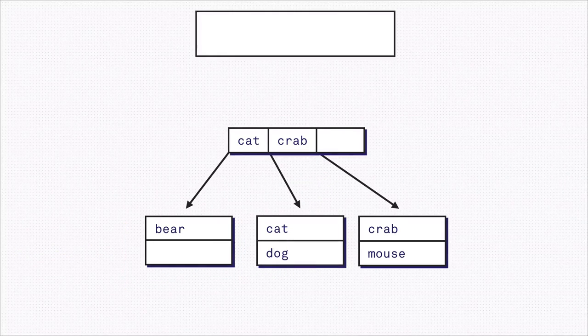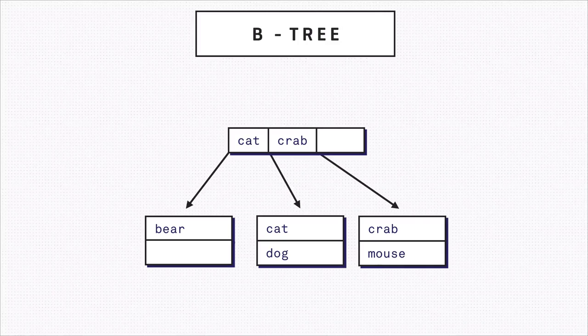This data structure is called a B-tree. Balancing the B-tree is a cost that we have to pay with every insert, but our worst-case scenario still performs in logarithmic time.